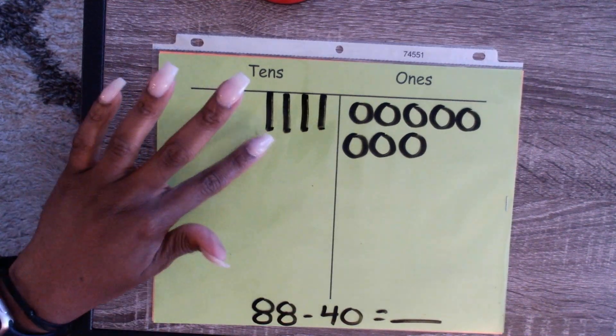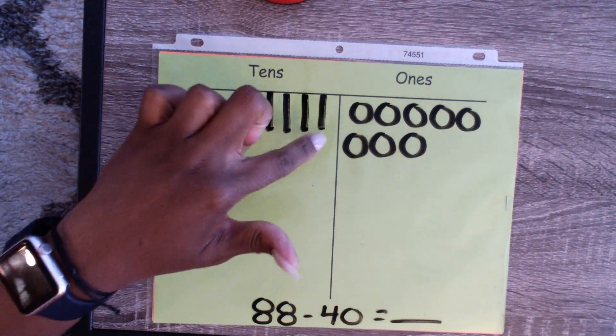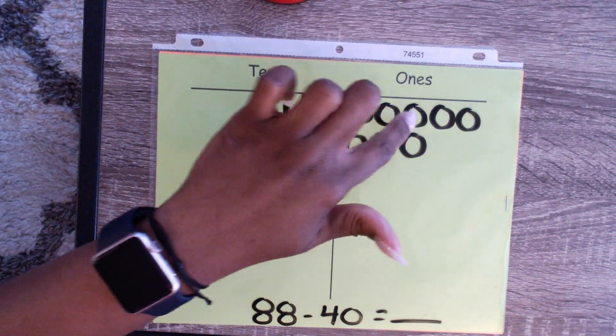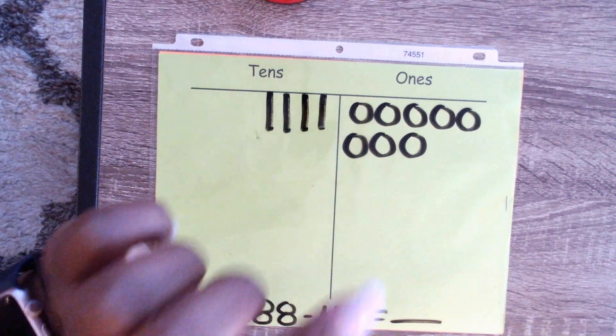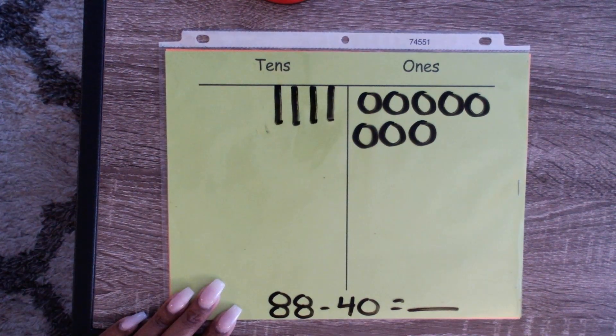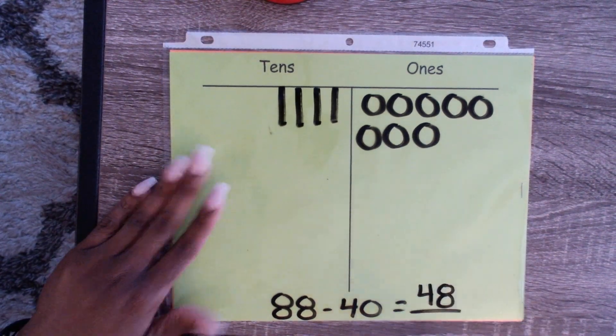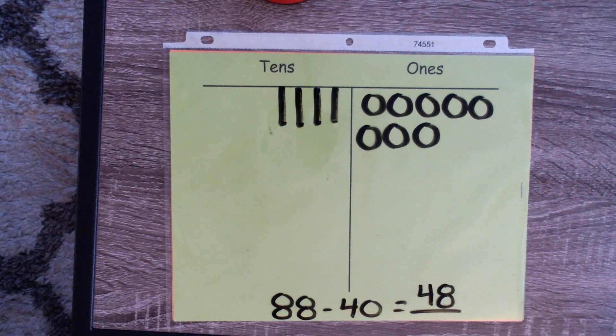Now we have erased 4 tens. Let's see what we have left. Let's count: one, two, three, four, or 10, 20, 30, 40, 41, 42, 43, 44, 45, 46, 47, 48. So we know that 88 minus 40 equals 48. Super cool job, guys.